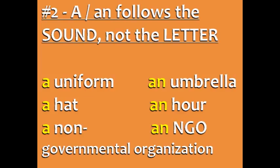For example, we say 'a uniform' because 'uniform' starts with a 'yuh' sound, but 'an umbrella' because 'umbrella' starts with an 'uh' sound — a vowel sound.